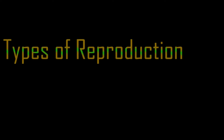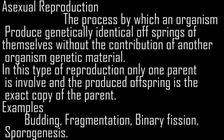Types of reproduction. Asexual reproduction: the process by which an organism produces genetically identical offspring of themselves without the contribution of another organism. In this type of reproduction, only one parent is involved and the produced offspring is the exact copy of the parent. Examples include budding, fragmentation, binary fission, and sporogenesis.